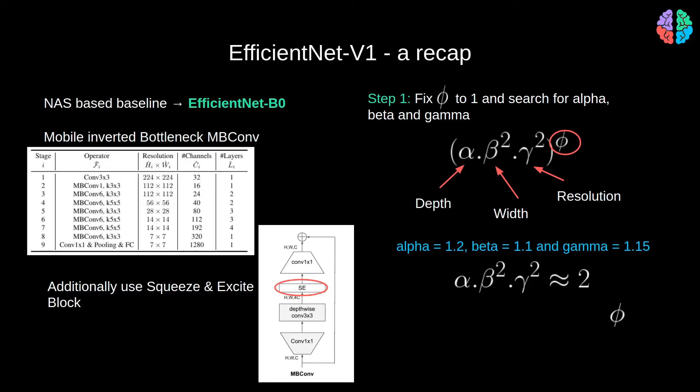After this step, we can proceed with increasing the compound scaling coefficient phi to arrive at bigger models. So the result of step 1 is the EfficientNet B0 model, and with scaling, we obtain EfficientNet B1 to B7.